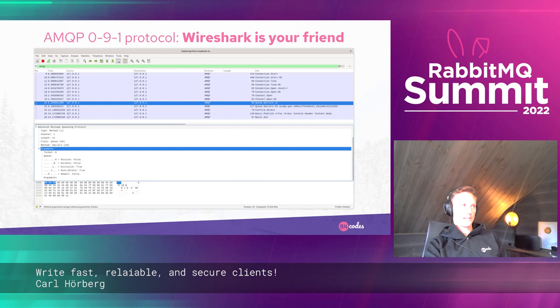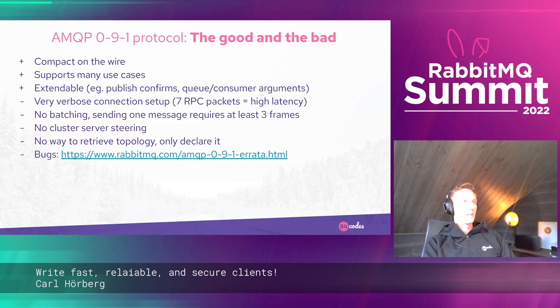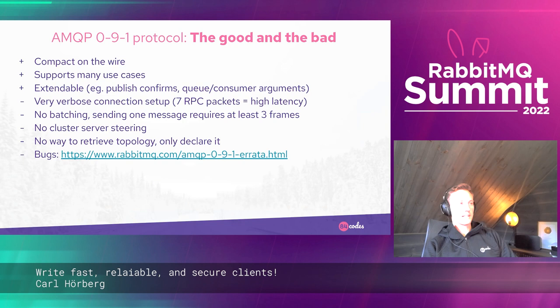AMQP 0-9-1 is very compact on the wire because it's a binary protocol. It supports many use cases — everything from work queuing to pub/sub and everything in between. It's very extensible: it's easy to add new classes and methods. For example, RabbitMQ added publish confirms, which isn't part of the original AMQP 0-9-1 protocol. It's also easy to add new functionality like queue types or consumer arguments by extending the existing mechanisms available in the protocol.